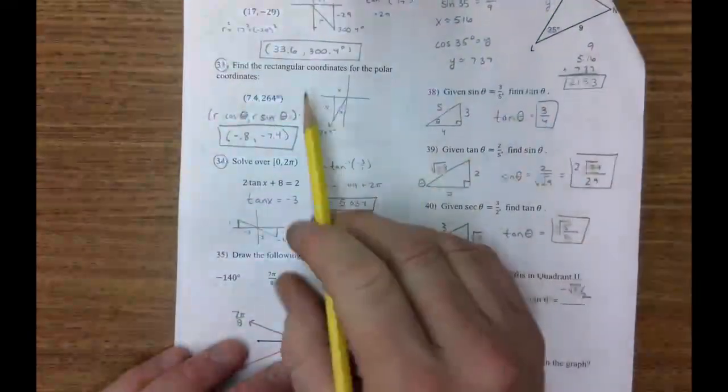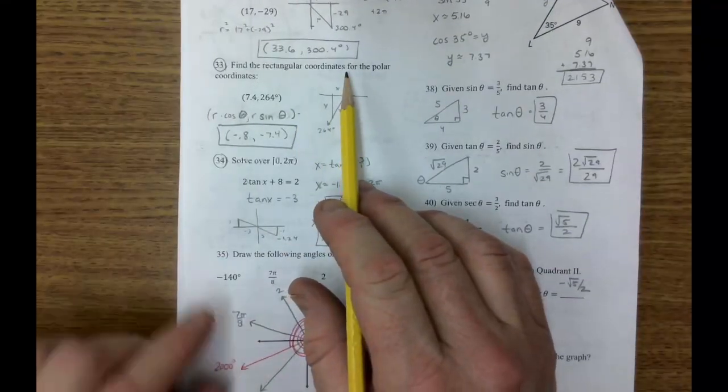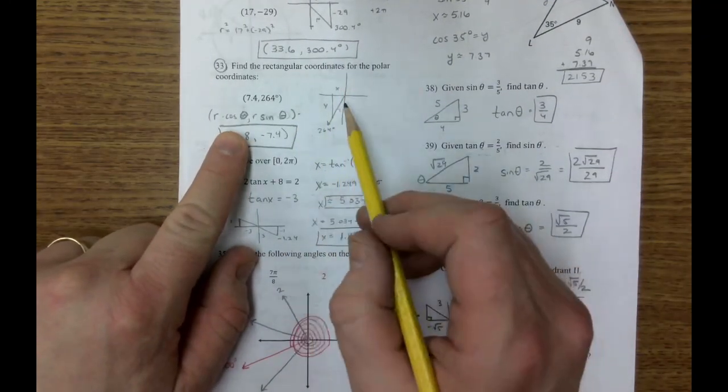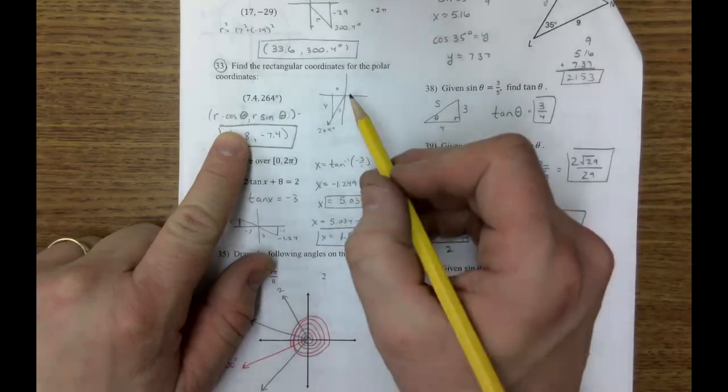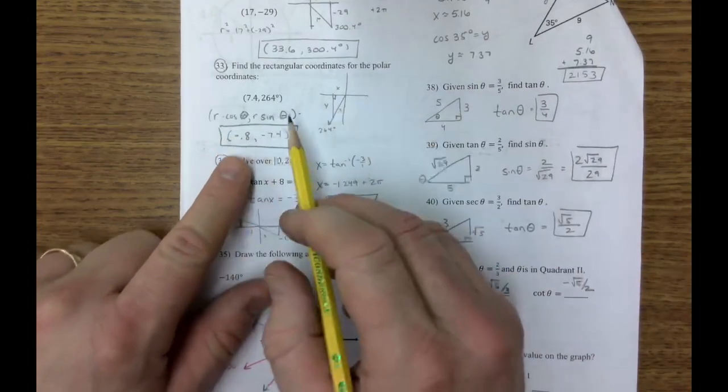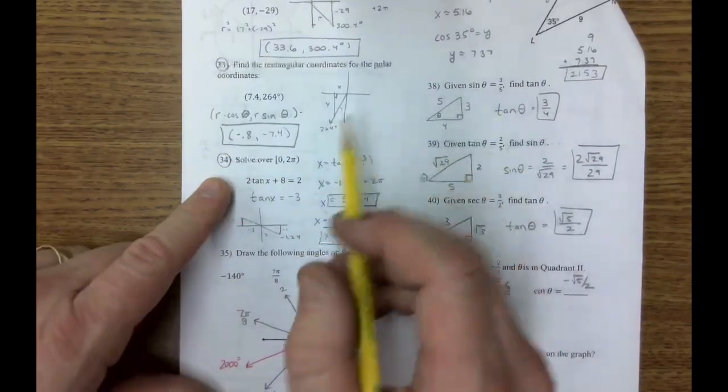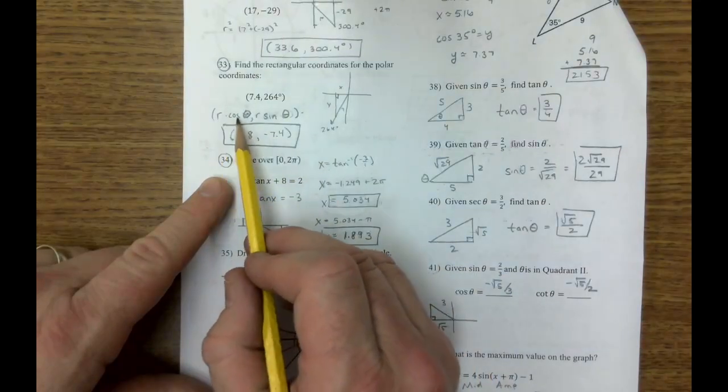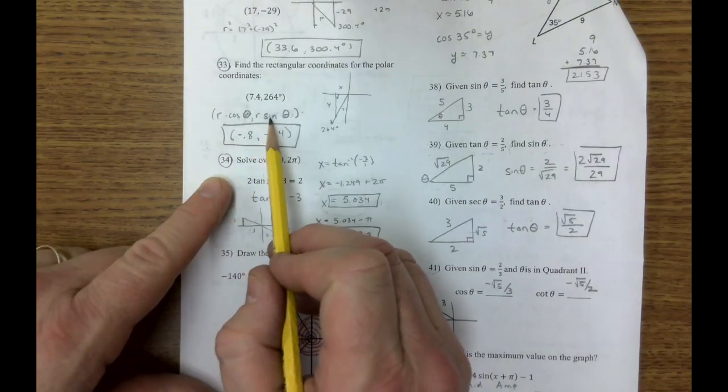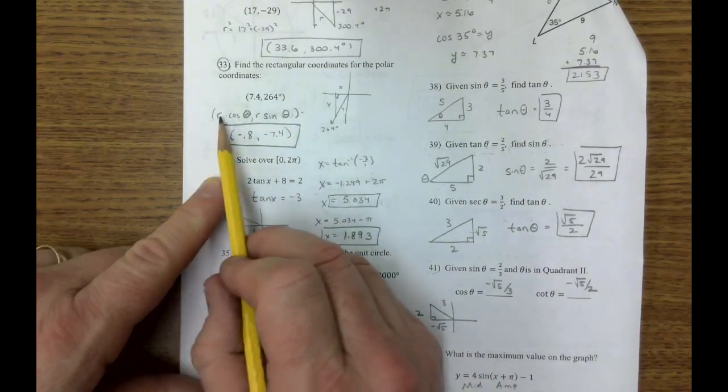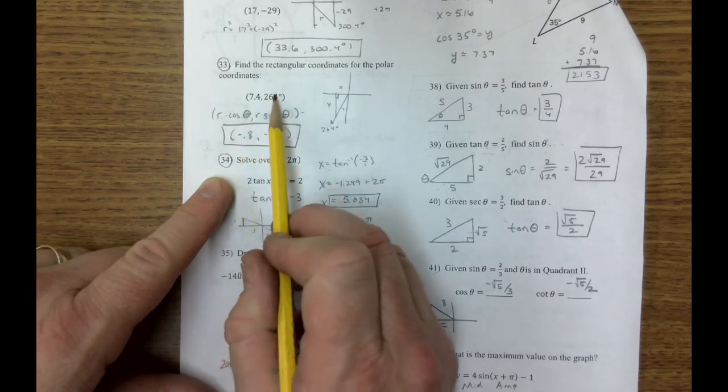On the next page, find the rectangular coordinates. To get to rectangular coordinates, you can draw a picture, use your trig equations. However, at this point, we want to know the shortcut. And the shortcut is r cosine theta, r sine theta. And you just multiply that in there. r times cosine of theta.